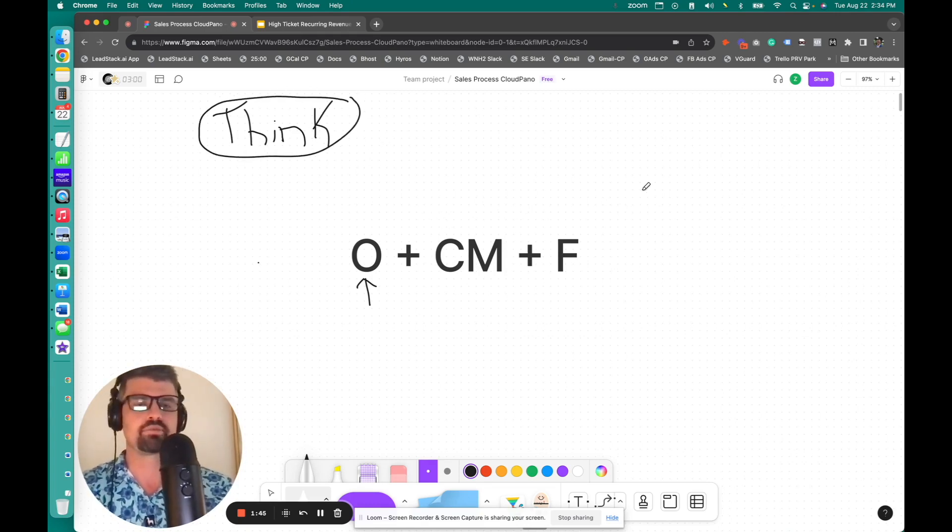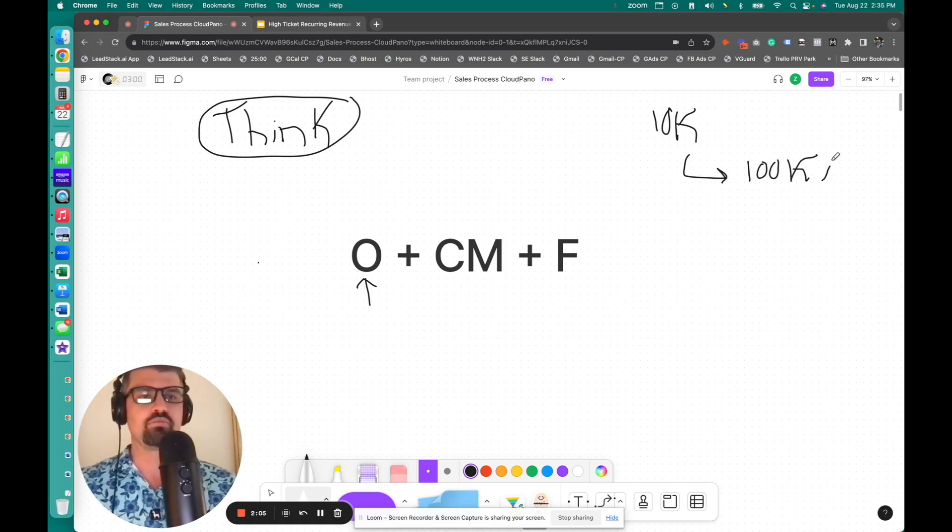Because oftentimes, what all of us are looking for whenever we first get something started is something very simple. Like, can I make $10,000 a month with an offer, with a specific service, or a series of services to a specific niche? And then of course, can I scale it to $100K a month? That is a question you should be asking yourself up front.